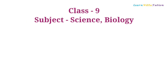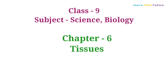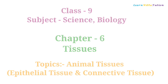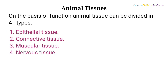Class 9 Science Biology, Chapter 6: Tissues. Topics to be learned in this video: Animal Tissues, Epithelial Tissue, and Connective Tissue. On the basis of function, animal tissue can be divided into four types: Epithelial Tissue, Connective Tissue, Muscular Tissue, and Nervous Tissue.